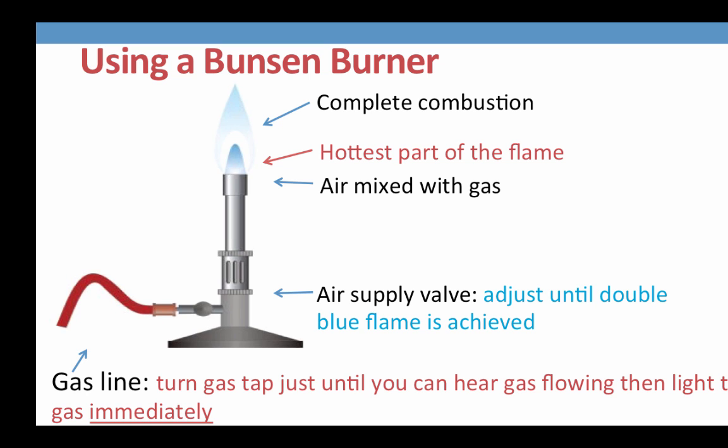We can then adjust the airflow to achieve a perfect dual flame by adjusting the air supply valve at the base of the Bunsen burner. Simply twist this valve until you can see a clear distinction between the inner blue flame and the outer blue flame.